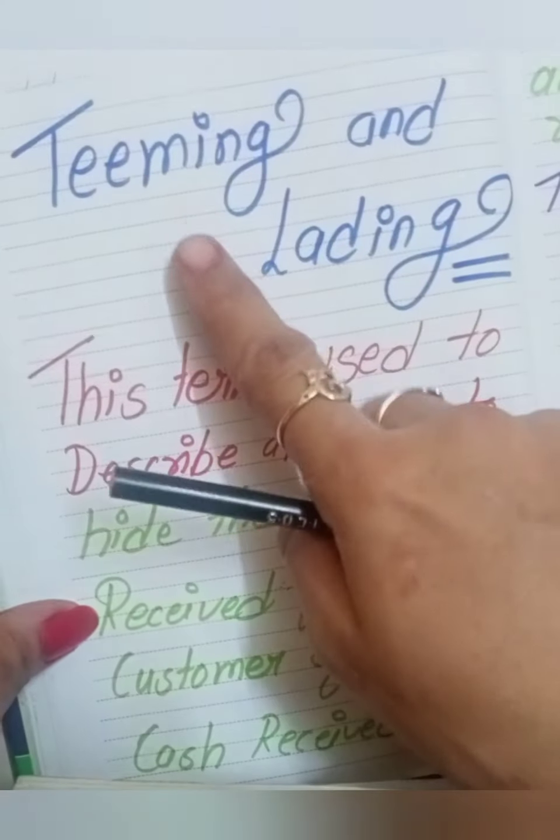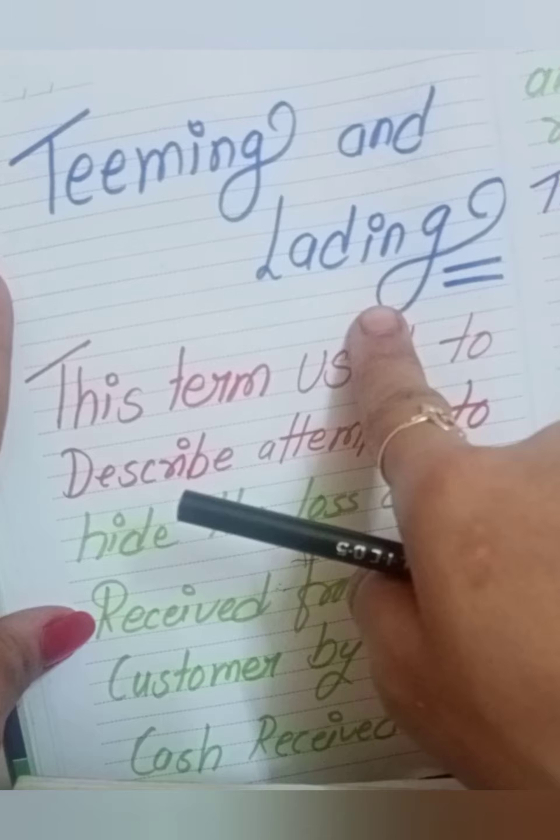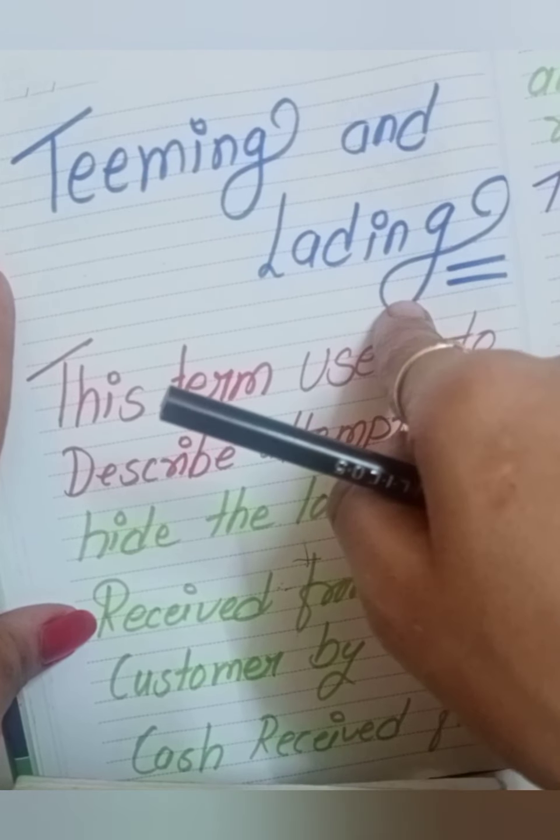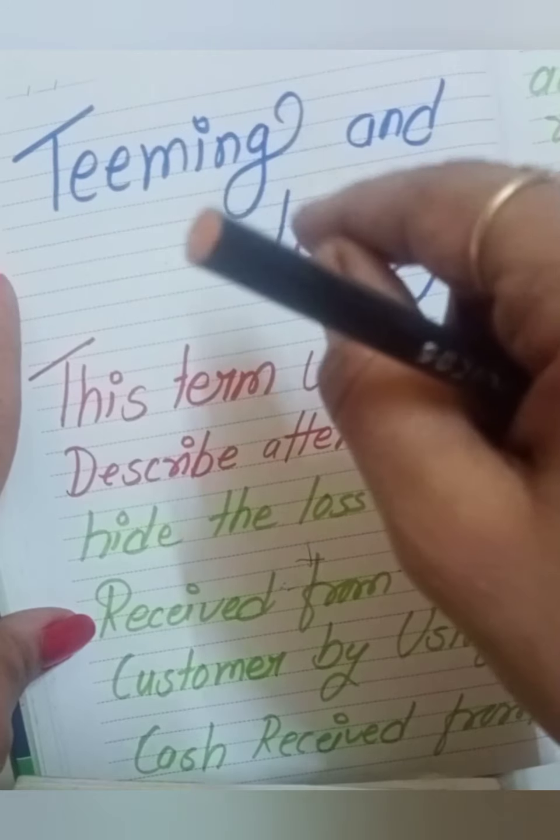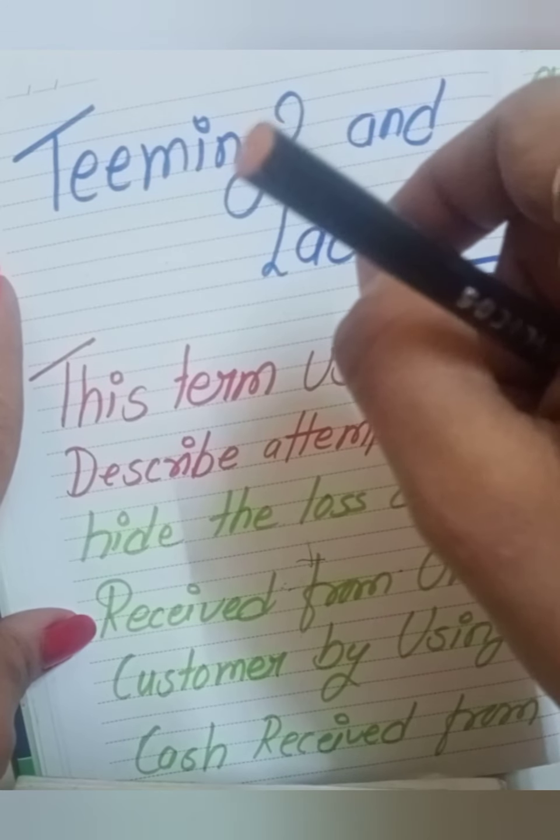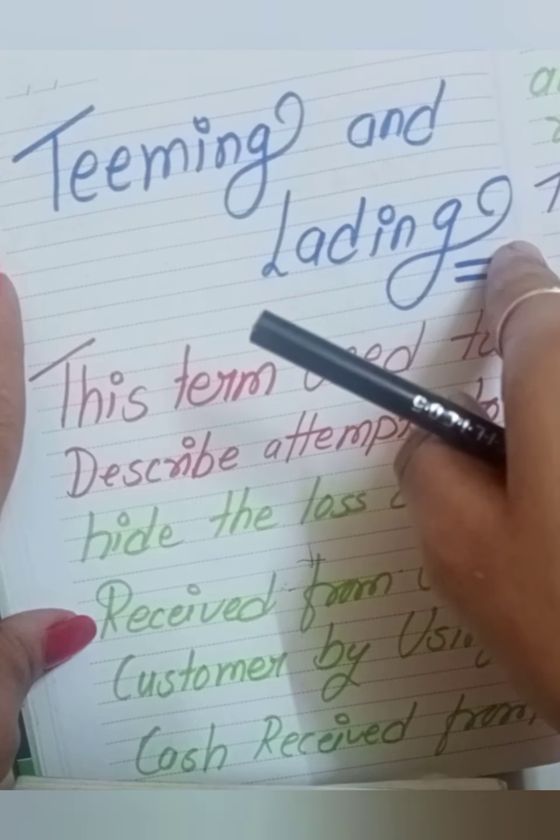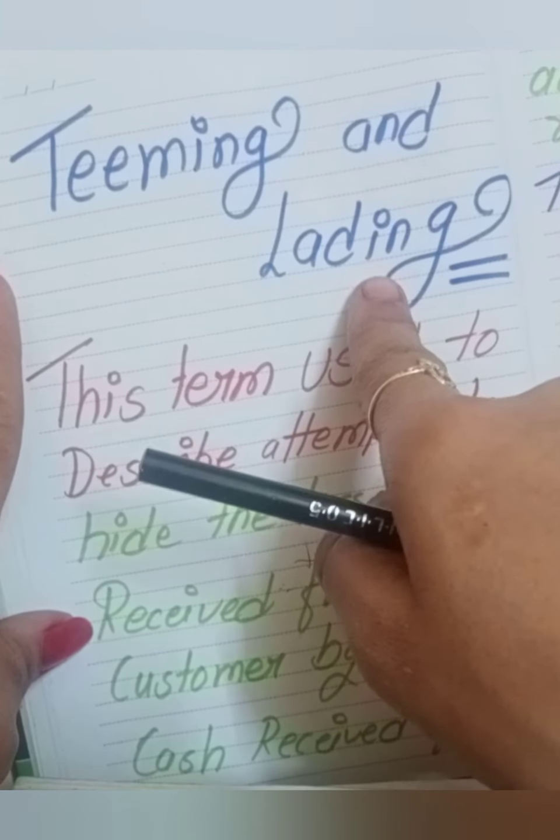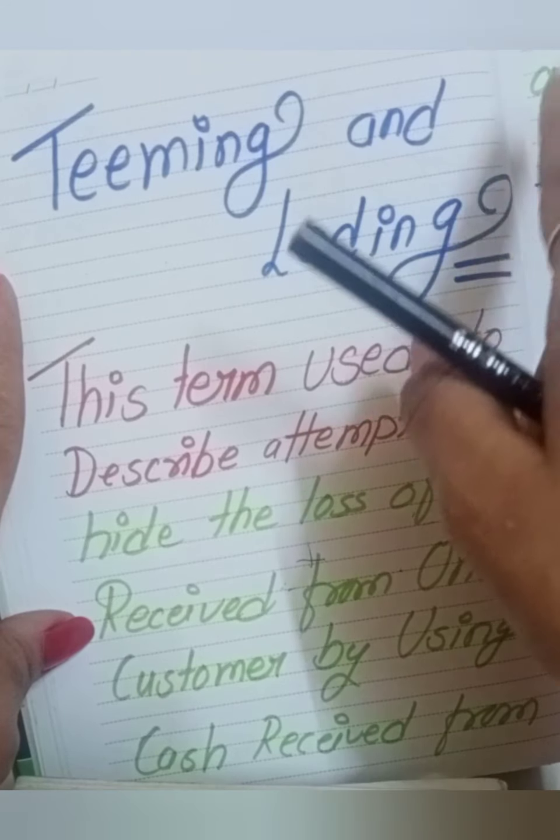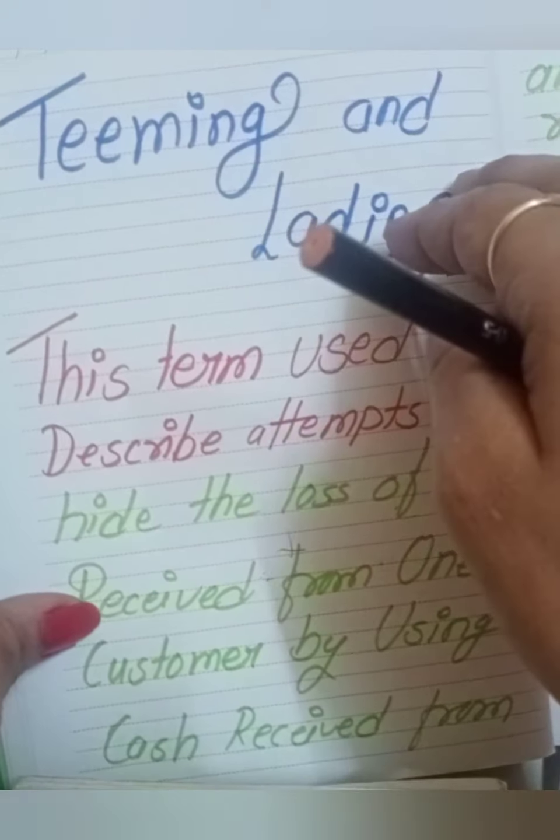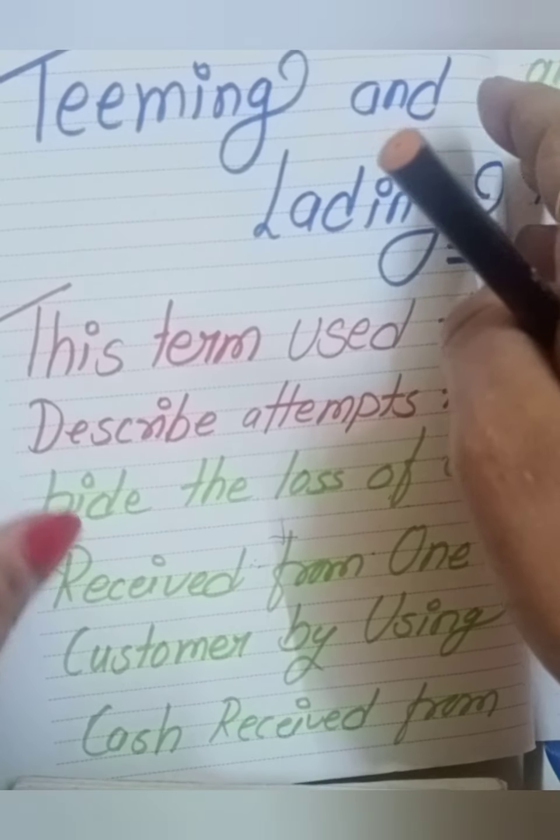So it is called teeming and lading. Understood? Teeming and lading has another name also: short-term banking, delay accounting, and lapping. Teeming and lading is replacing one customer's payment with another's. You don't know which person's payment was misused, and the fraud continues undetected.